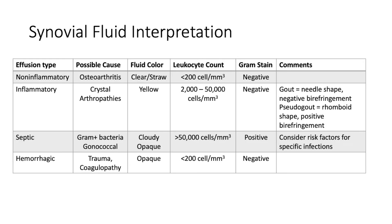Refer to the slide for further information on how to interpret this analysis. Briefly: for non-inflammatory etiologies such as osteoarthritis, you will see a white blood cell count less than 200 and a negative gram stain. For inflammatory etiologies, you will see a white blood cell count from around 2,000 to 50,000 with less than 25% neutrophil predominance and a negative gram stain. For a hemorrhagic sample, you will see less than 200 white blood cells and a negative gram stain. For septic arthritis, you will see a white blood cell count over 50,000 with over 90% neutrophil predominance and a positive gram stain.